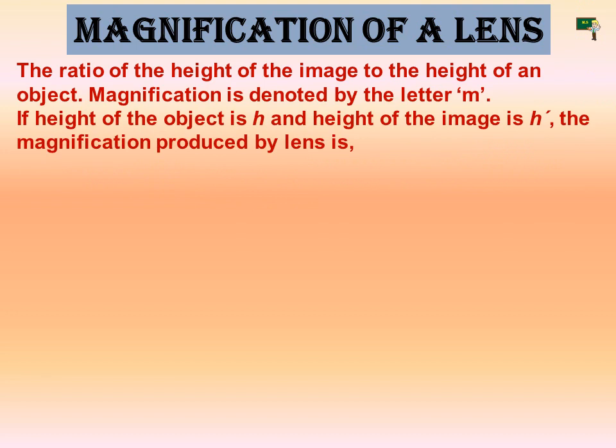Magnification of lens. Nowadays we use the lens to magnify the objects. Like spherical mirrors, we have magnification for spherical lenses. Spherical lenses produce magnification, and it is defined as the ratio of the height of the image to the height of the object. Magnification is denoted by the letter M, and it depends upon the ratio of the height of the image to the height of the object.